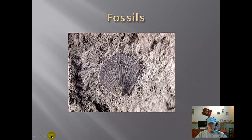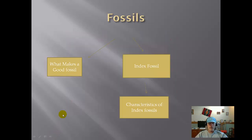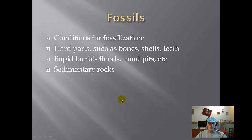Next we take a look at fossils — what makes up a good fossil and what index fossils are. Fossils really need hard parts: bones, shells, teeth, etc. Rapid burial is also important. If the critter is sitting out after it dies, it can get eroded away, eaten, and scattered, and you would not have good fossils. But if you get rapid burial like from a flood, stuff gets covered up very quickly. Mud pits, tar pits — the La Brea tar pits outside of LA is a good example of this.